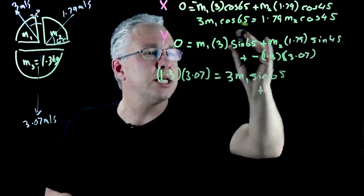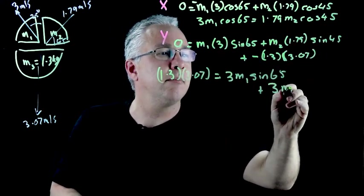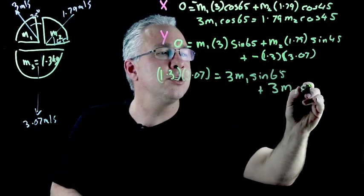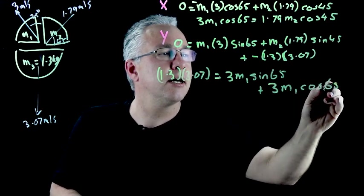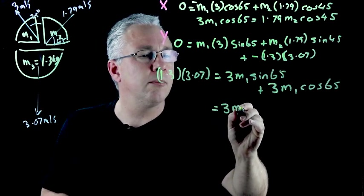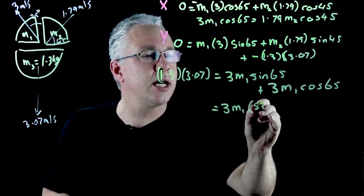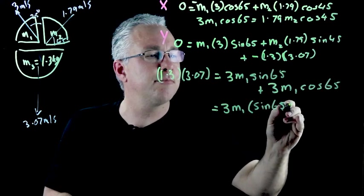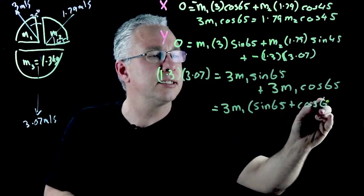So I have 3 m1 cosine 65. So in other words this is equal to 3 m1 outside of sine 65 plus cosine 65.